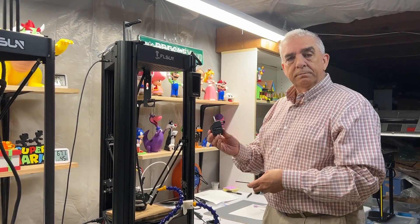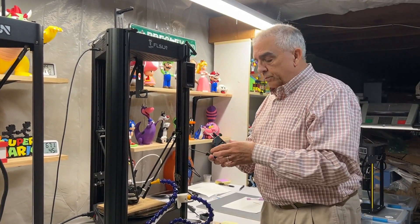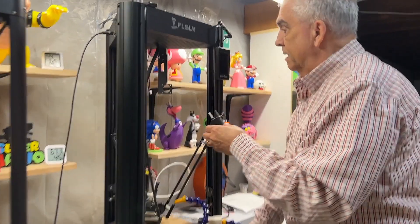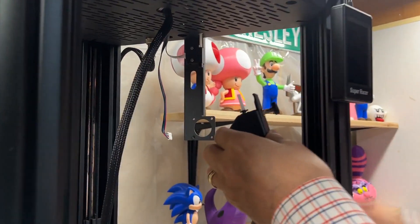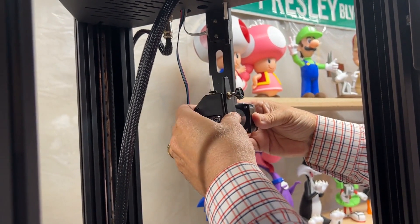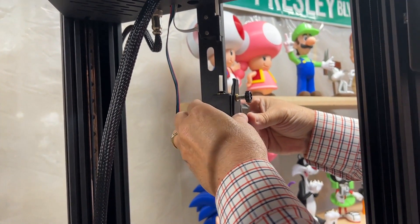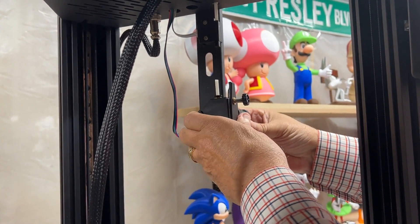Alright. So now it's time to put the extruder back onto the printer. Again, just do the opposite of what we did moments ago. So we'll come over here. Take the motor, put it in the back. Take this. Now when you put that back on there, just wiggle it around a little bit, just to make sure the gears all line up.